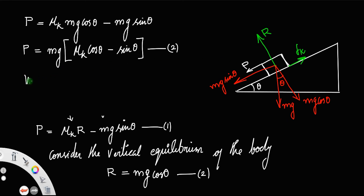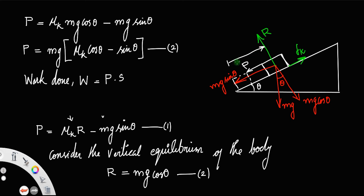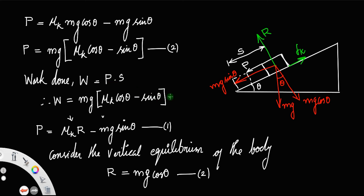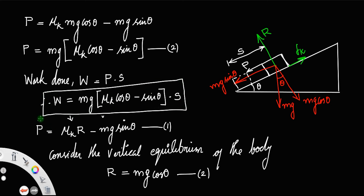Therefore, the work done will be W equals force times displacement, that is P times s, where s is the distance we move this mass along the plane — from its initial position to its final position. So W equals mg times (mu k cos theta minus sin theta) times s. This is the expression for work done by the force to move the body down the inclined plane.